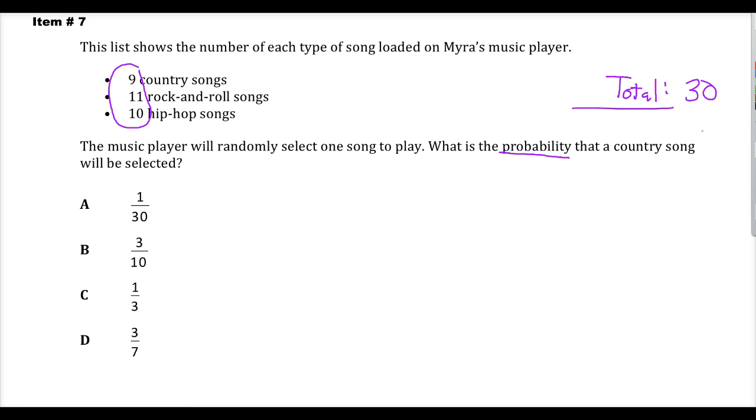Once you get that, for probability, it's essentially what's referred to as the preferred item over the total. Or if you want to think about it in a different way, it's what you want over all you've got.